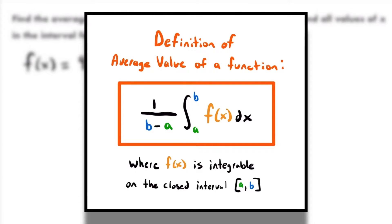The values a and b are the lower and upper bounds of the integral and of our given closed interval. For f(x) to be integrable on that interval, the function must be continuous on the interval including the endpoints — meaning f(x) is defined for every value of x on the interval, with no undefined results.